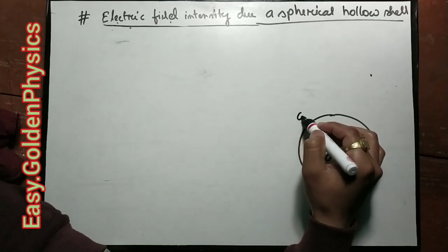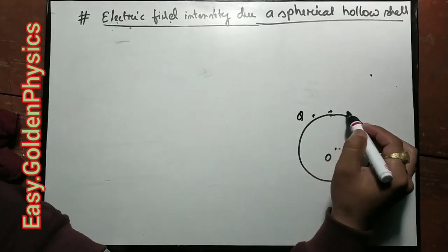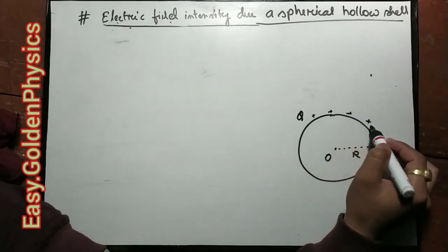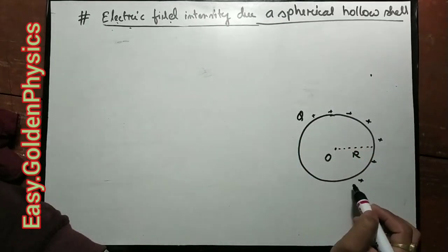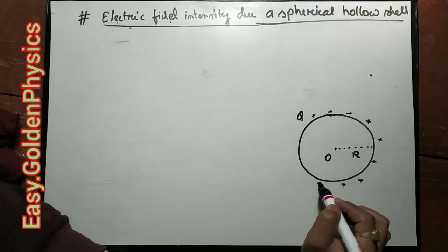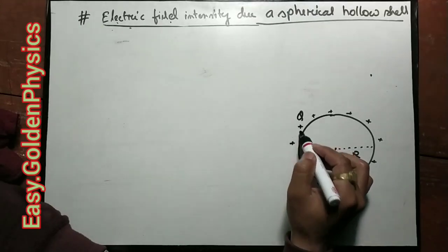The total charge on the sphere is called Q. The charge is uniformly distributed on the conductor.